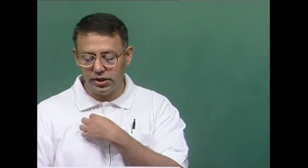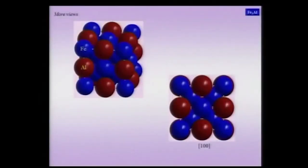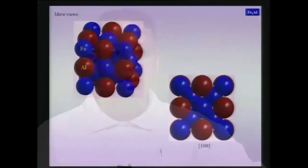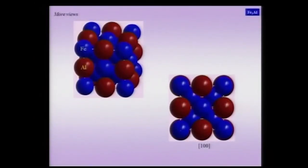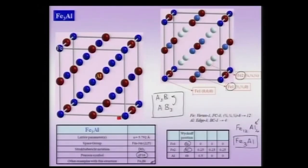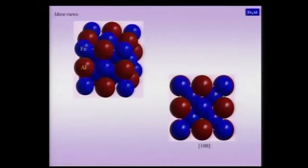Let us try to understand this structure a little more. This is a space-filling model wherein you can clearly see the aluminum and iron atoms touching each other — this is a [100] view of the same. The only way to understand such complex crystal structures is to visualize them from many angles and use various models: space-filling model, ball-and-stick model, wire-frame model. You can see the normal face-centering positions occupied, and additionally the atoms at the 1/4, 1/4, 1/4 positions.